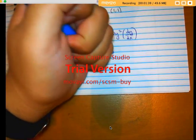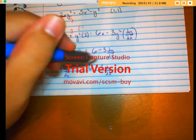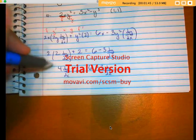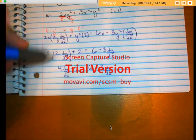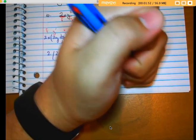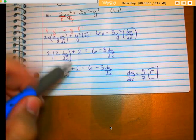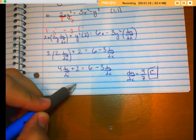I'm going to move the 2 over here, the 3 over here, and find that my answer is dy dx is equal to 4 sevenths. See, do the rest of the algebra. I've run out of paper and I've run out of time.